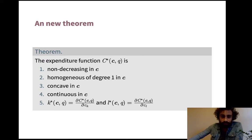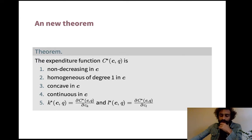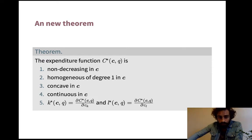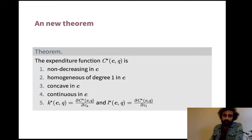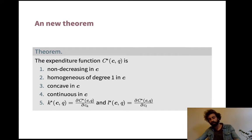Since what we're doing now is exactly expenditure minimization, we have the exact same theorem — just replacing e's with c's, p's with c's, and u's with q's. The cost function is non-decreasing in c: if input costs go up, the optimal total cost cannot decrease. If all costs double, the trade-off between inputs is the same, so I choose the same input vector but my total cost doubles — meaning the cost function is homogeneous of degree one in costs.